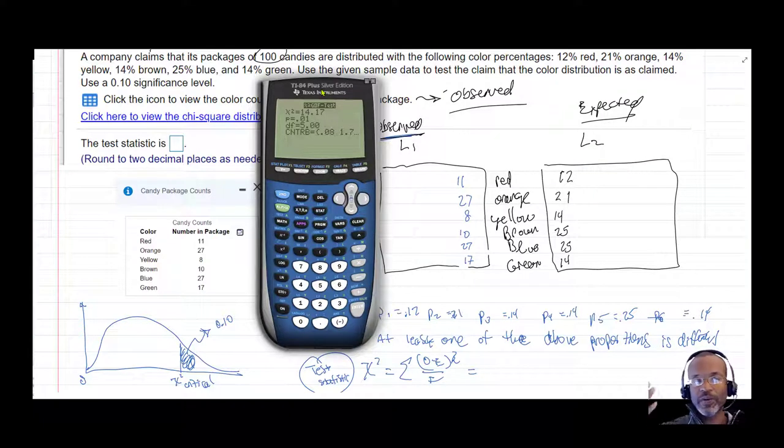So right away, given that the p-value is 1%, and our significance level has been stated, our p-value is low enough. It's 1% versus the 10%. So we can make a decision based on that right there. Our p-value is improbable enough for us to reject the null hypothesis and conclude that at least one of the above proportions is different.